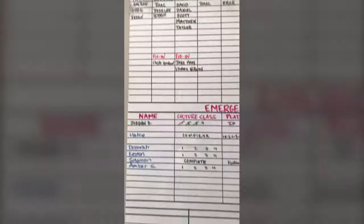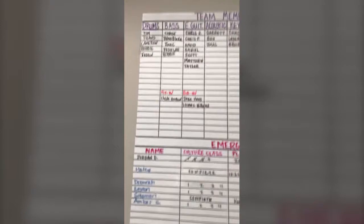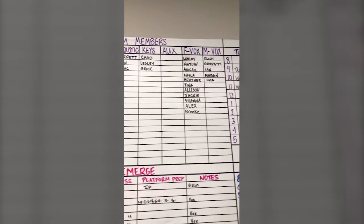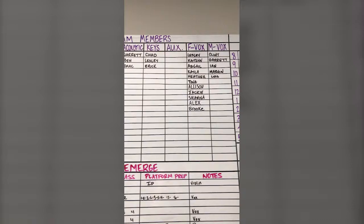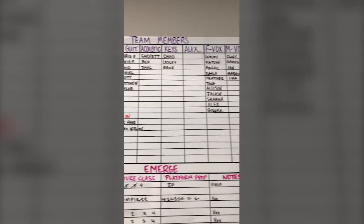Okay, top of the board: team members and fill-ins. This is giving us an idea of the roster — where we're at, what we're doing. As you can see, AUX is a little low; we're going to fill it up. We have three campuses currently, and this is kind of where we're at.